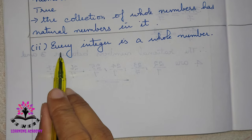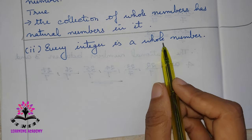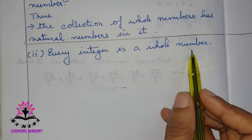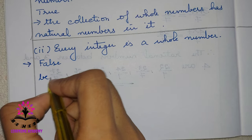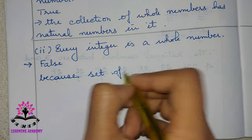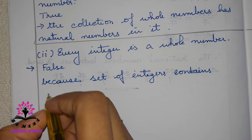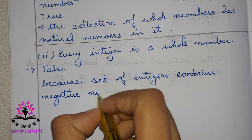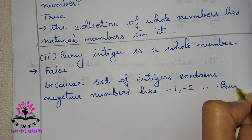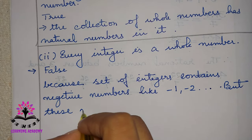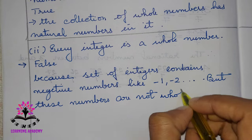The second part is: every integer is a whole number. Integers include positive integers and negative integers. But whole numbers start from 0, 1, 2, 3, 4 — there are no negatives. So the answer is false, because the set of integers contains negative numbers like minus 1, minus 2, and so on, but these numbers are not whole numbers.